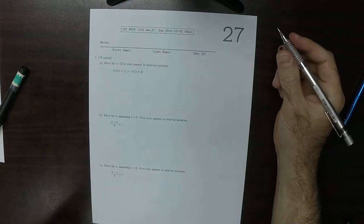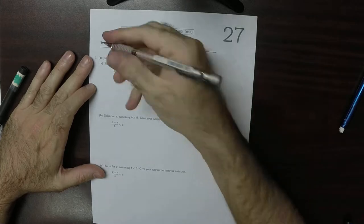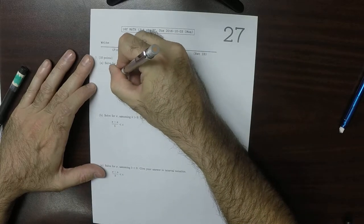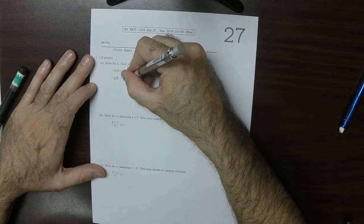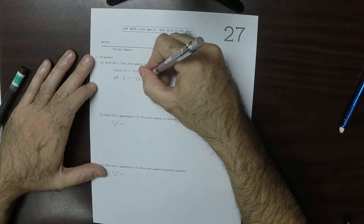This is the solution to Written Homework 27. Okay, so let's carry this out. That would be negative 6x minus 3 greater than negative 2x minus 8.